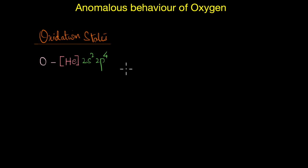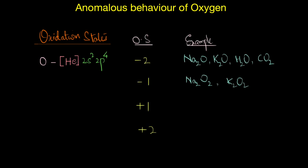We know that oxygen is the second most electronegative element and because of that it tends to show mostly the negative oxidation states, which in most cases is minus 2. For example, in sodium oxide, potassium oxide, H2O water, carbon dioxide, in all of these you can see that the oxidation state exhibited by oxygen is minus 2.